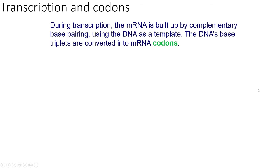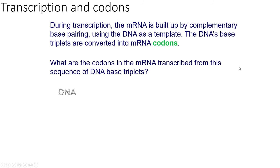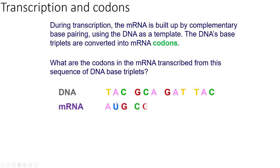Now a brief introduction to transcription, pointing out codons because they'll be important later on. During transcription, your mRNA is built up by complementary base pairing and it uses the DNA as a template. The DNA's base triplets get converted into mRNA codons. The mRNA would be transcribed across — T, A, A to U because there's no thymine; C to G; G to C; C to G; A to U, no thymine, and so on.